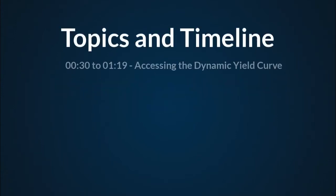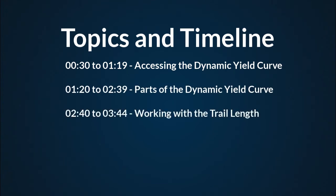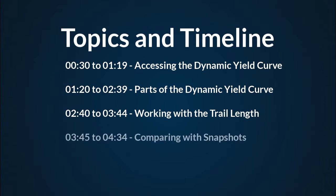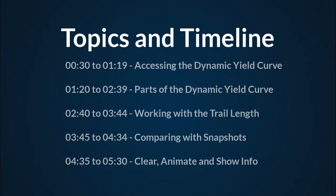Here are the topics and timeline for today. First we'll show you how to access the dynamic yield curve. Then we'll go over the parts of the page, how to work with the trail length, how to compare using snapshots, and finally we'll go over the clear, animate, and show info functions.